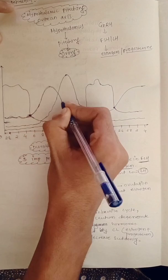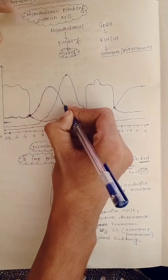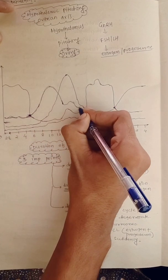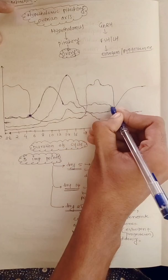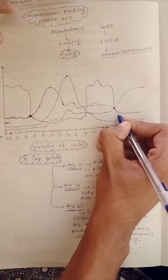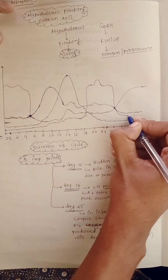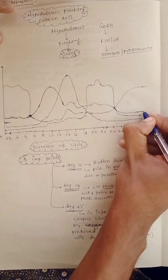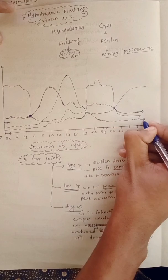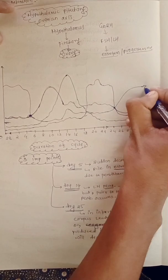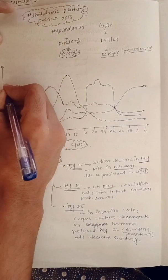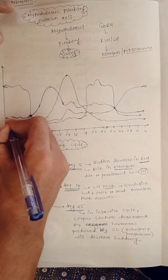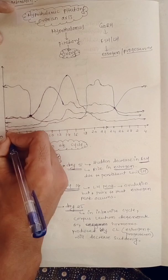For estrogen: the estrogen level will plateau due to secretion from the corpus luteum after ovulation, but on day twenty-five the corpus luteum will degenerate and estrogen levels will also come down.